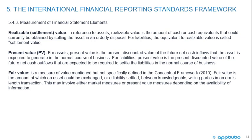Continuing measurement of financial statement elements. Realizable/settlement value: for assets, realizable value is the cash that could currently be obtained by selling the asset in an orderly disposal; for liabilities, the equivalent is settlement value. Present value for assets is the present discounted value of future net cash inflows expected in the normal course of business; for liabilities, it is the present discounted value of future net cash outflows required to settle the liabilities. Fair value is the amount at which an asset could be exchanged or a liability settled between knowledgeable, willing parties in an arm's-length transaction.